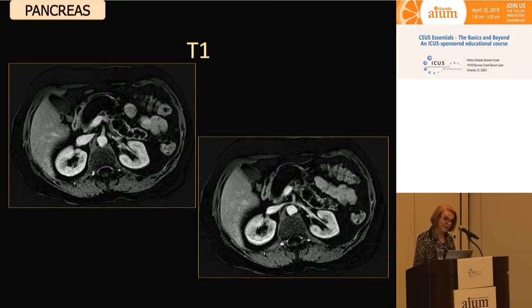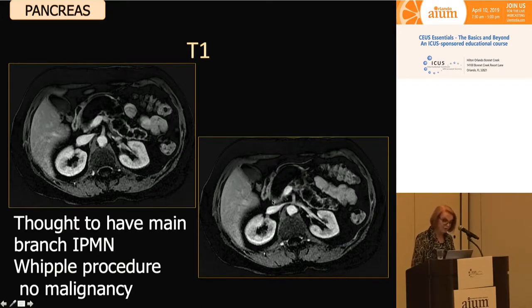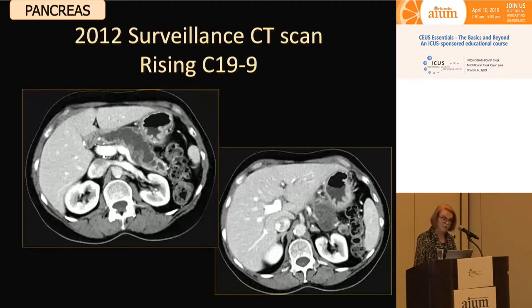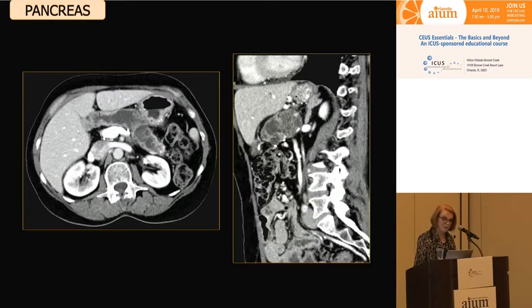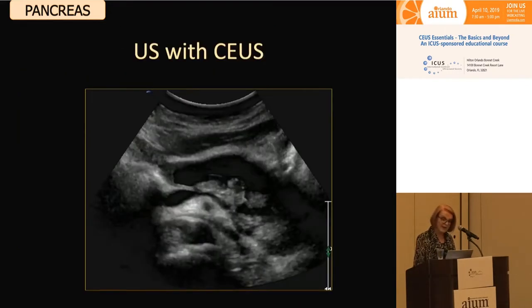This patient had a Whipple's procedure, reported as showing an IPMN tumor but no malignancy. On follow-up, MR scan continues to image the same dilated duct after the pancreatic head was removed — thought to be main branch IPMN. She had a Whipple procedure showing no malignancy. On surveillance scan, CT and MR scans don't report any pathology, although she has a rising CA 19-9, which is a marker for cholangiocarcinoma. At that point she came to us for CEUS.